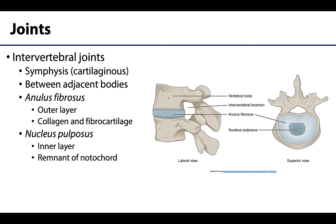Lastly, and perhaps most importantly, are the intervertebral discs, located between neighboring vertebral bodies — from between C2 and C3 all the way down to between L5 and S1. These are not synovial joints but instead examples of symphyses, which are a type of cartilaginous joint, so it is cartilage that connects these articulating bones.